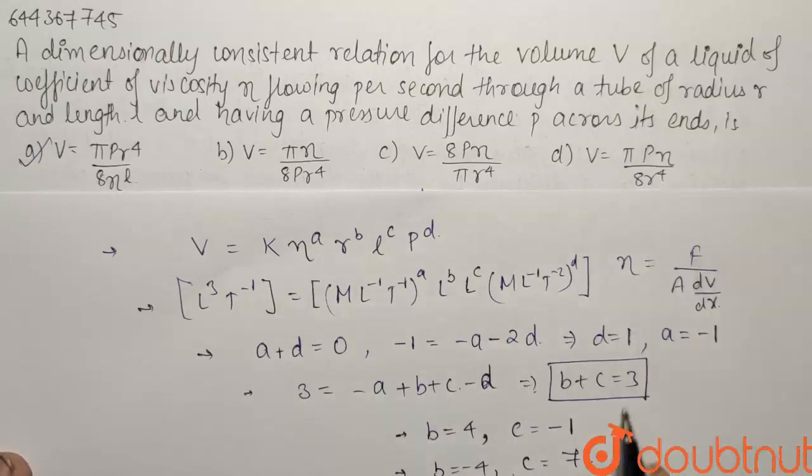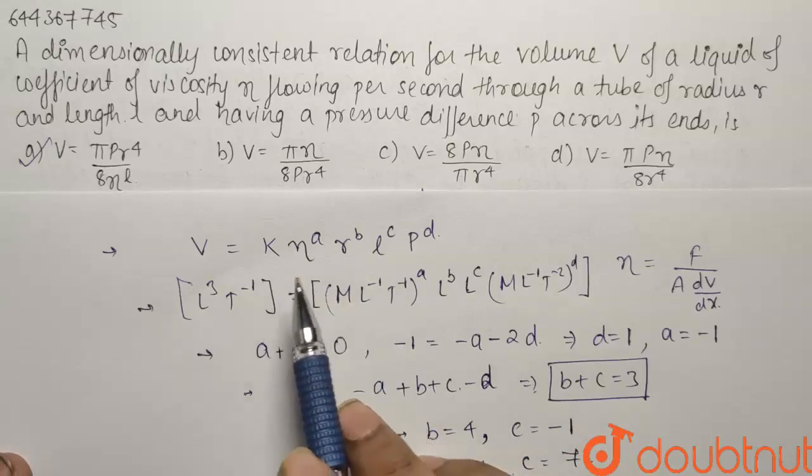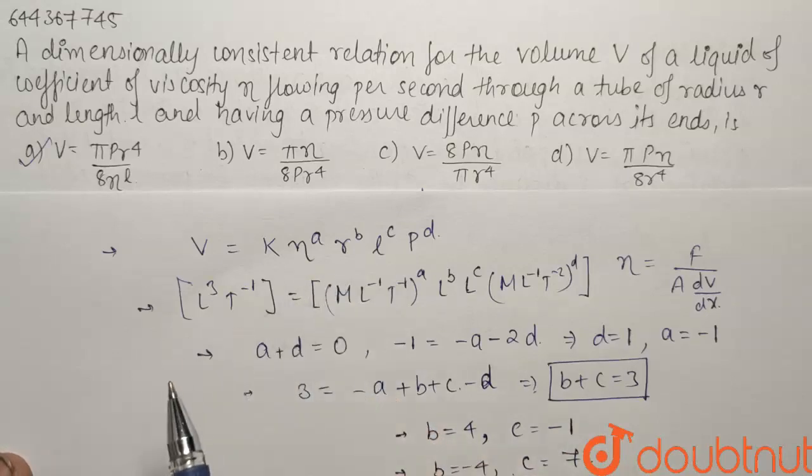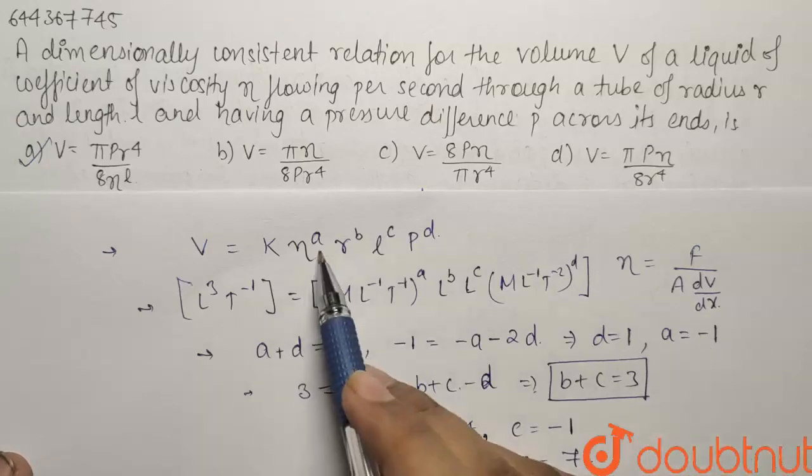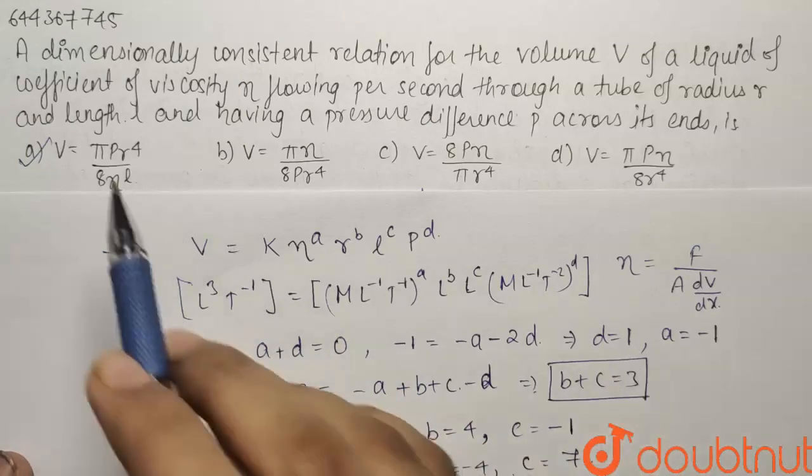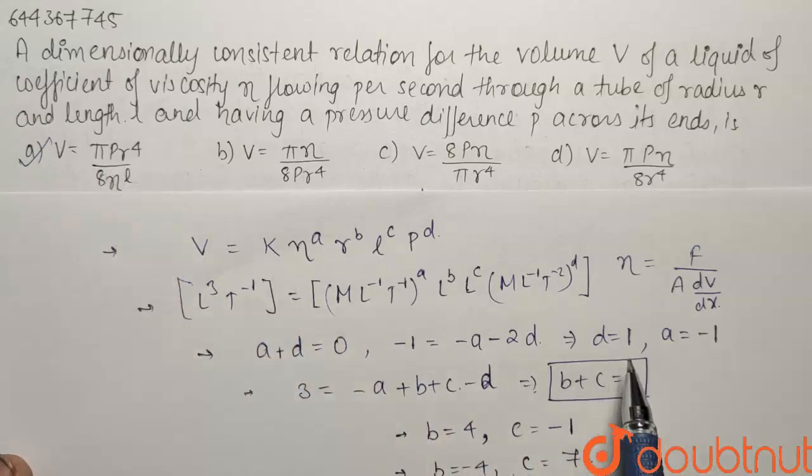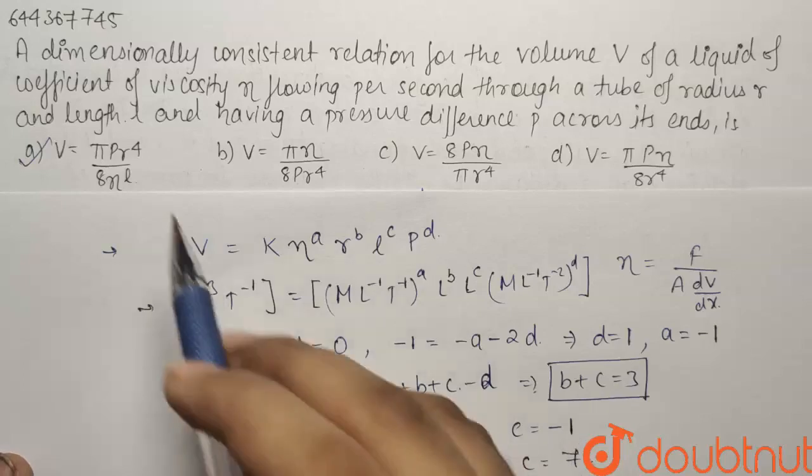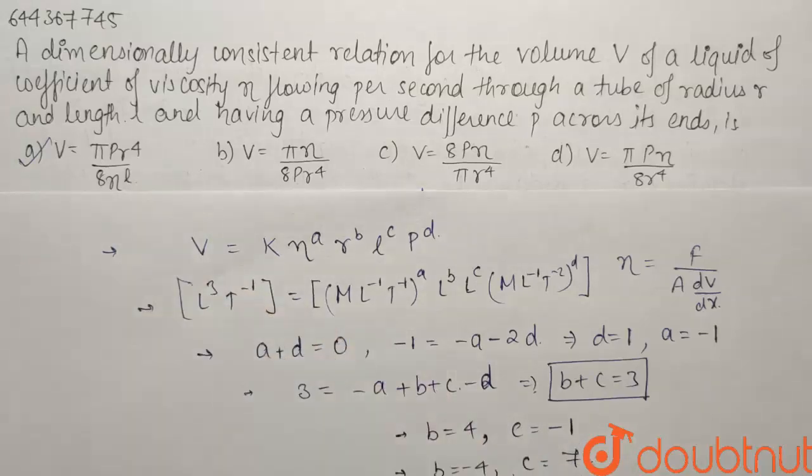So only correct option for the given question will be our option A that volume will be equals to pi by 8 that is our constant K multiplied by pressure R to the power 4 divided by Eta multiplied by L. Why so? Because our A was equals to minus 1 and what was A? A was Eta so Eta is minus 1. D was our pressure so pressure is 1 here also pressure is 1. B will be equals to 4 so our radius has the power 4 and L has the power minus 1 here so L has the power minus 1 here. So our correct option is our option A.